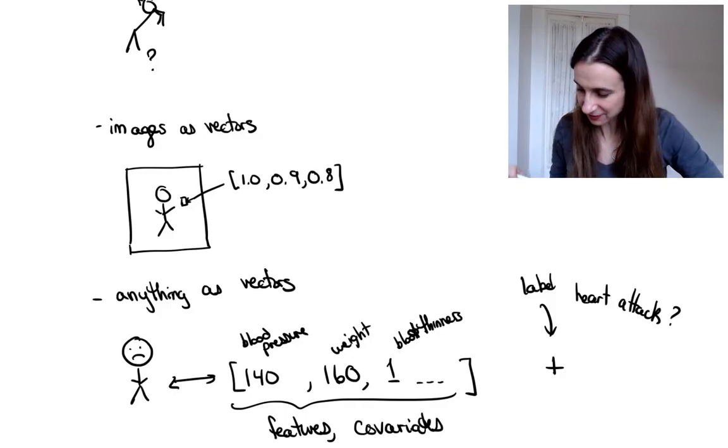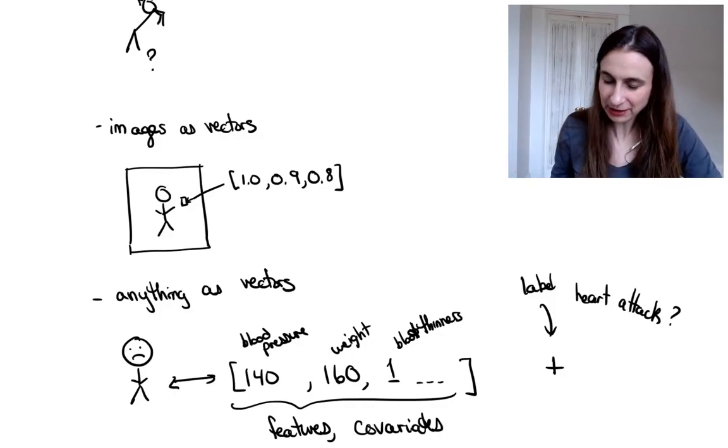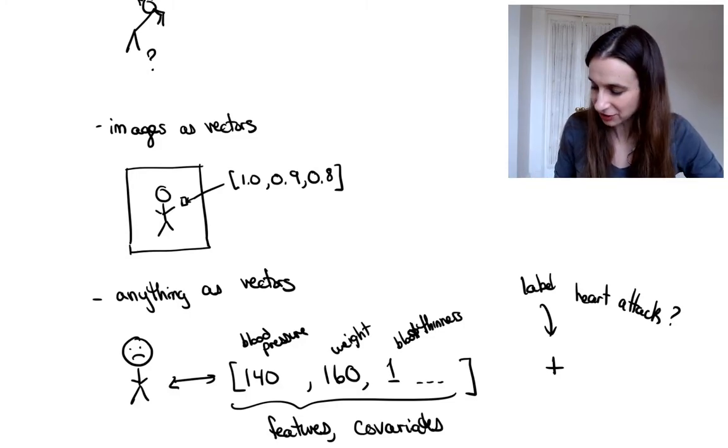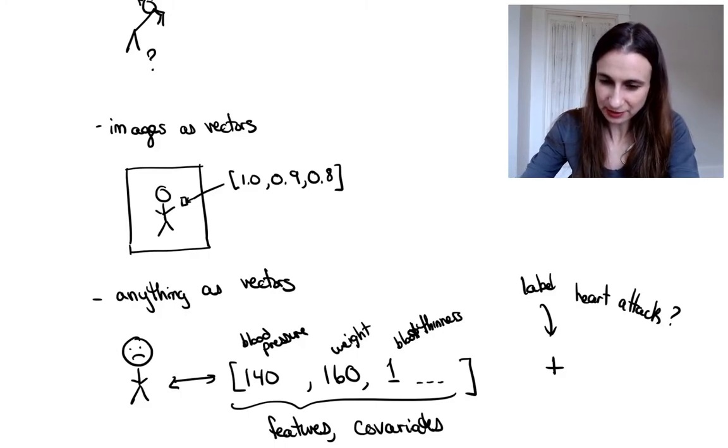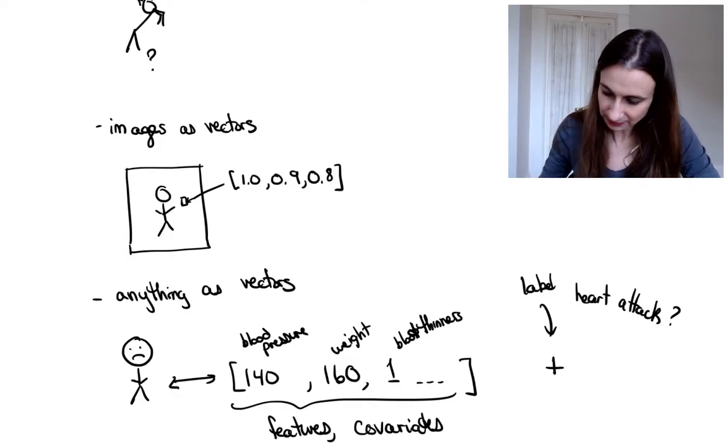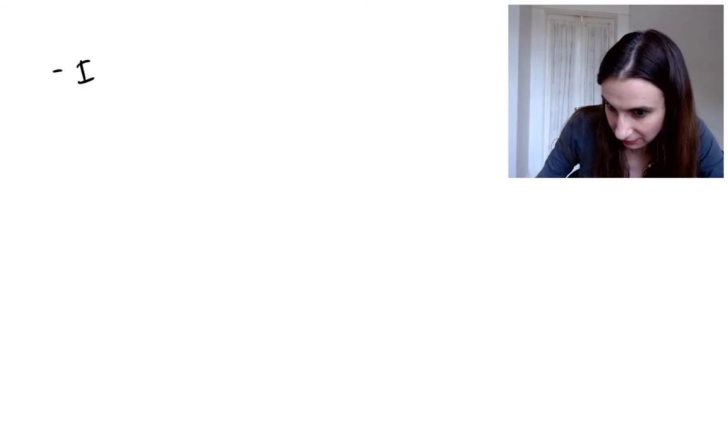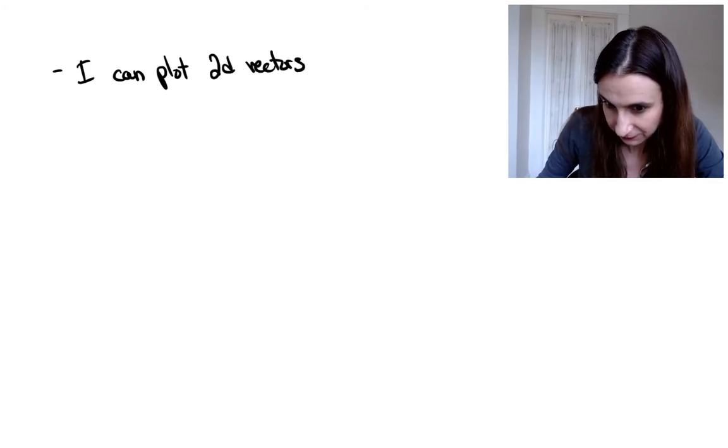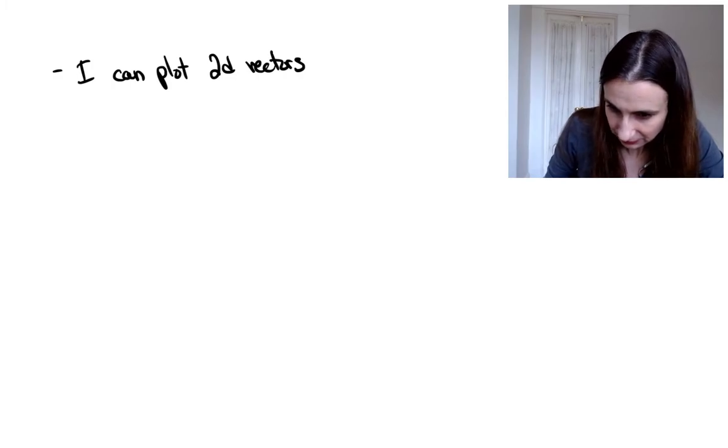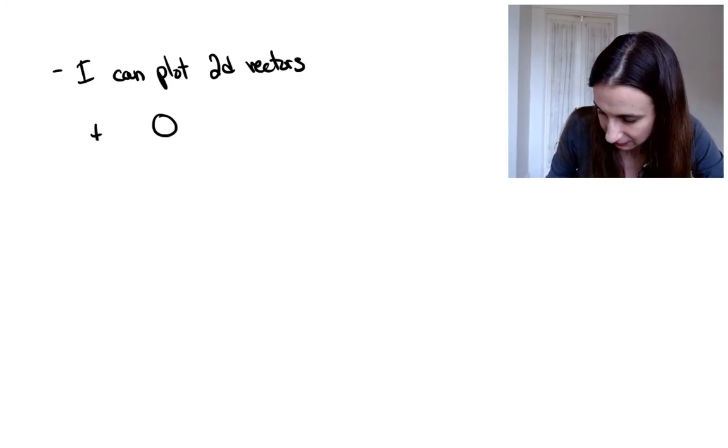And you have your whole database consisting of lots and lots of feature vectors that are labeled. And then for vanilla classification, given a new feature vector, we're trying to predict the outcome, which is the label for that feature. Okay, now if you're working in, say, two dimensions or something like that, you can actually plot the whole dataset. So, I'm just going to write here, I can plot 2d vectors. So if I have like, you know, a person who is positive, they're sad because they got a heart attack.